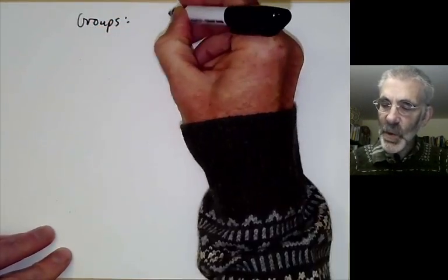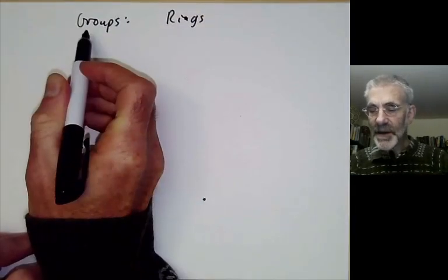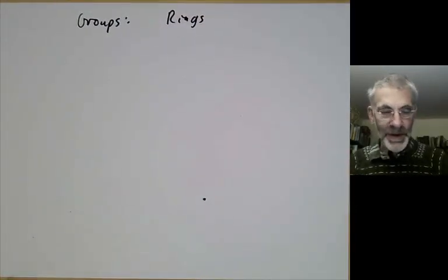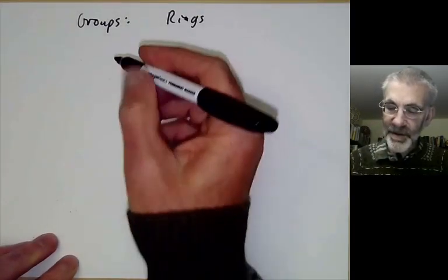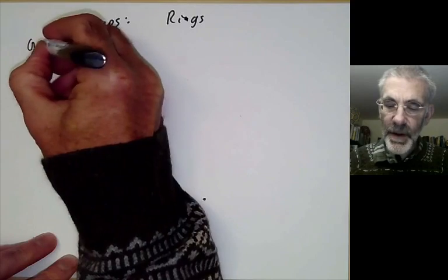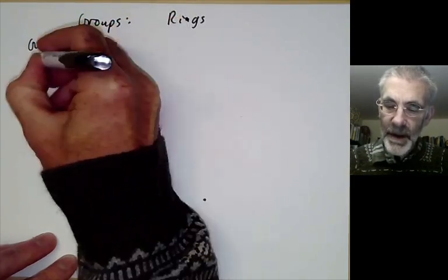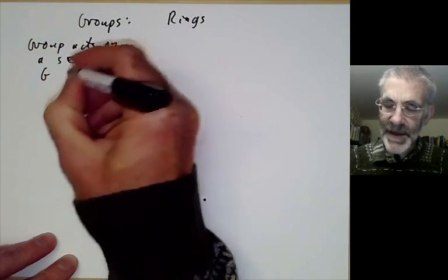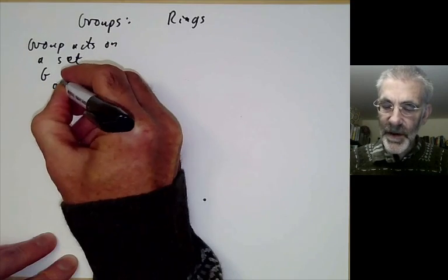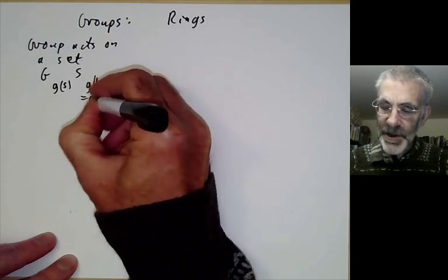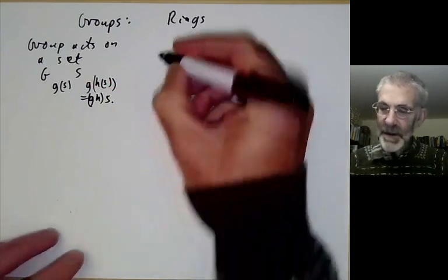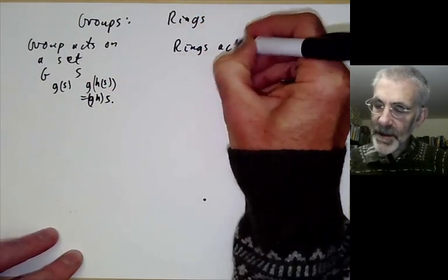What I'm going to do is show there's a very close analogy between groups and rings. A lot of basic constructions you can do for groups you can also do for rings, and I'm going to go through this as a way of introducing a lot of basic operations on rings. First of all, what can a group do? Well, a group acts on a set — if you've got a group G acting on S it means we've got for any element g of the group we can apply it to an element s, and GH of s equals G of (H of s).